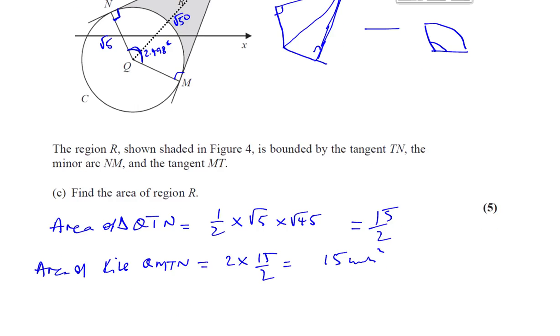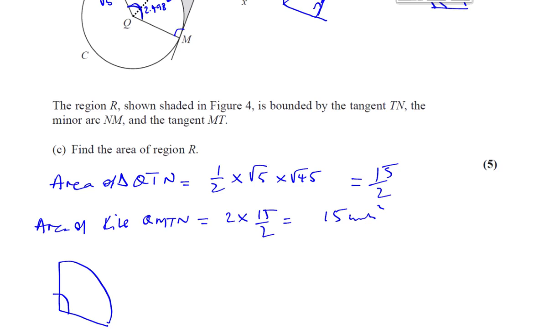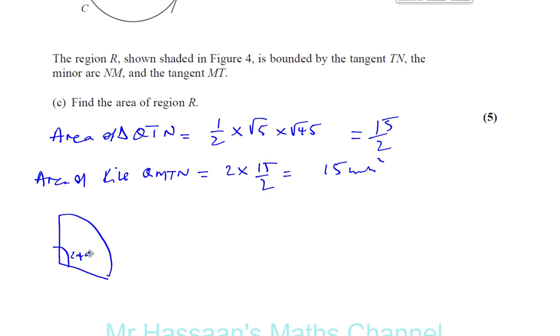And we need to find now the area of the sector. We know the angle to three decimal places, which is quite sufficient, 2.498, and we know the radius is root 5. So the area of a sector when we're dealing with radians is a half r squared theta. This is the formula when we're dealing with radians. So it's a half times root 5 squared, which is going to give you 5, times the angle, which is 2.498. That's the area of the sector.